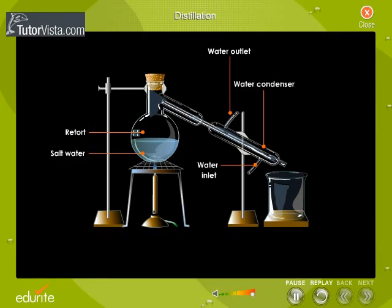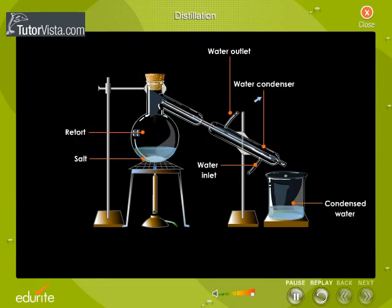The steam is collected in the beaker which is connected to the retort as shown here. The steam condenses into drops of water and the salt is left behind in the retort.